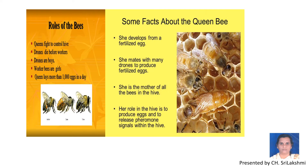Now let us see about queen bees. In the whole honeycomb, there is only one queen bee. The main function of the queen bee is to lay eggs. You can call her the mother of all the bees in the hive. Wherever the queen bee goes, all the other bees follow her, and that is due to a chemical called pheromone.